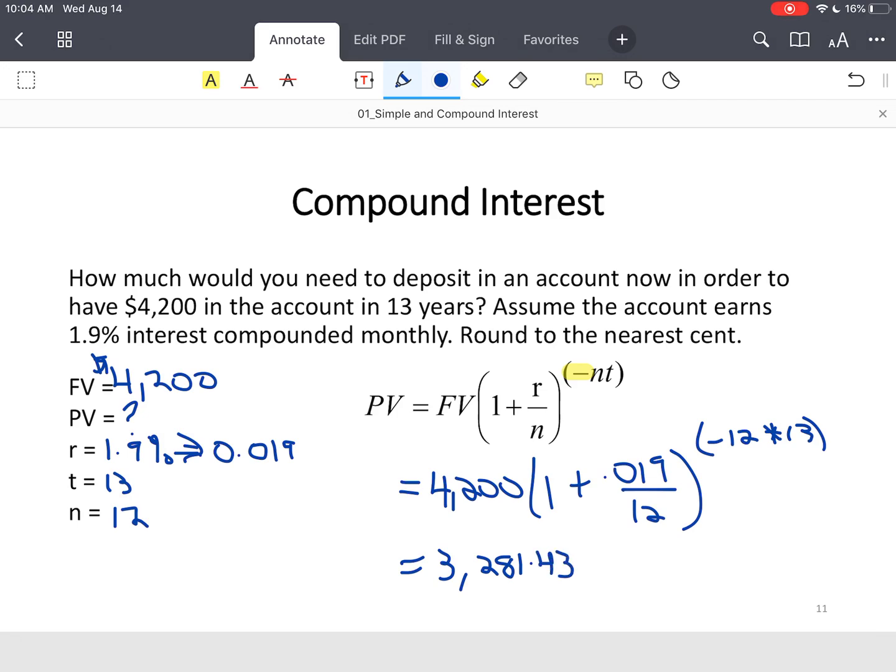Now, check the reasonableness of your answer. If I'm depositing the money today to have more money in the future, this value should be less than the future value. So, I know that's a good solution. Now, if I wasn't paying attention and I forgot that negative sign. If you forget this negative sign and you don't put it in there in your formula, you're going to end up with $5,000, or $5,375. That doesn't make sense because typically in savings accounts, savings accounts typically don't lose money. So, if it was greater than $4,200, that means you typically missed that negative sign. And that's how you apply compound interest formulas.